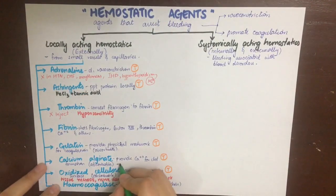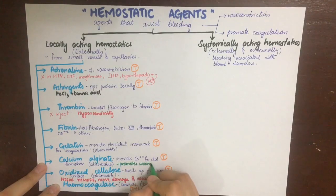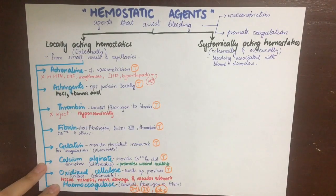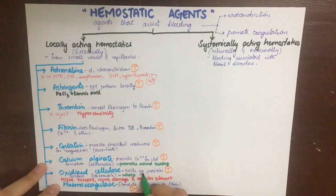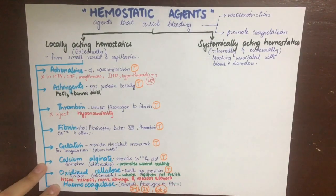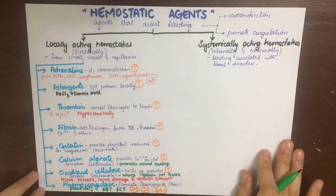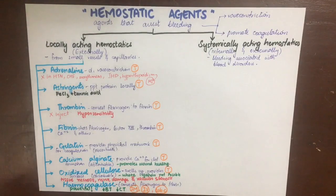Calcium alginate promotes wound healing. Oxidized cellulose is used where ligation is not possible. Heme coagulase is very powerful and will decrease both the bleeding time and the clotting time.